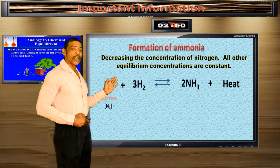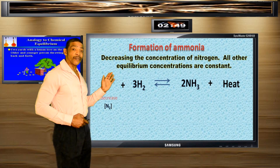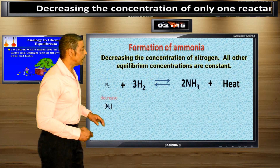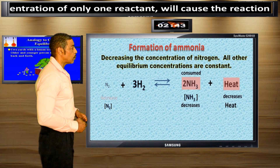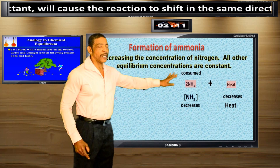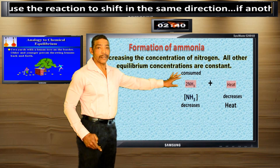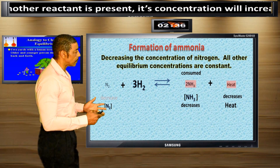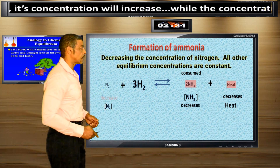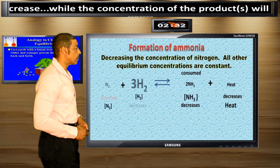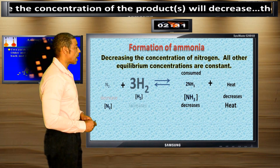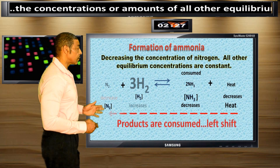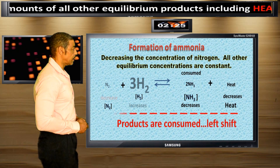Decreasing the concentration of nitrogen while holding all other concentrations constant. Decreasing N2 will consume NH3 and heat, causing their amounts to decrease as the reaction tries to reestablish equilibrium. But this will cause the amount of hydrogen gas, H2, to increase. This is called a left shift.